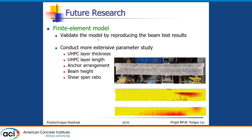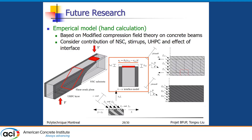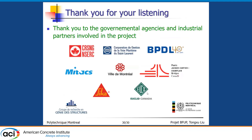In the future, we will use these experimental results to validate models by reproducing the beam test results, and conduct more extensive parametric studies covering thickness, length, anchor arrangement, and other parameters. We will also propose empirical models that consider not only the contributions of concrete, stirrups, and UHPC, but also the interface effect between concrete and UHPC, to explain the observed shear capacity behavior. Thank you — that concludes my presentation.